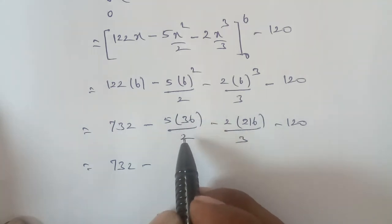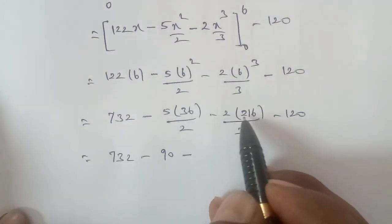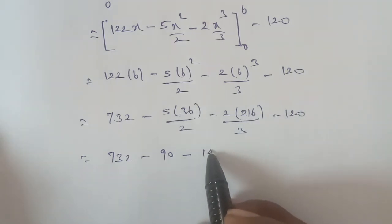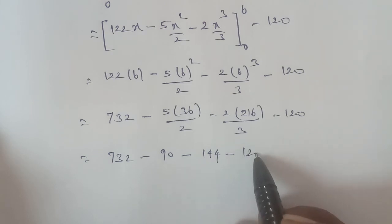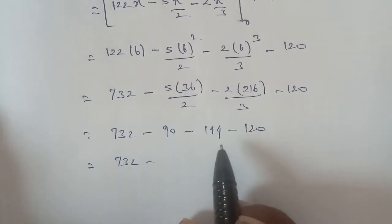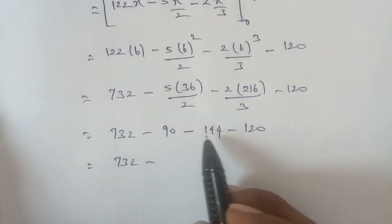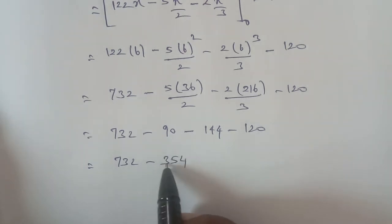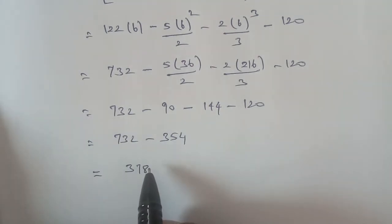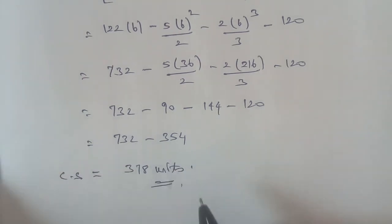Computing the final answer: 732 minus 90 gives 642, minus 144 gives 498, minus 120 gives 378. So the consumer surplus is 378. You will learn a somewhat similar answer — thank you.